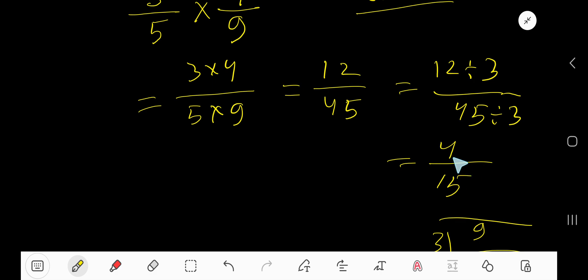That is, 4 over 15 is the reduced form. That is the answer.